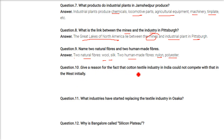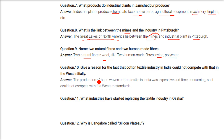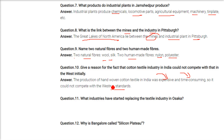Name a reason why the cotton textile industry in India could not initially compete with that of the West. The production of hand-woven cotton textiles in India was expensive and time-consuming, so it could not compete with Western standards where industrialization, machinery, and automation were used.